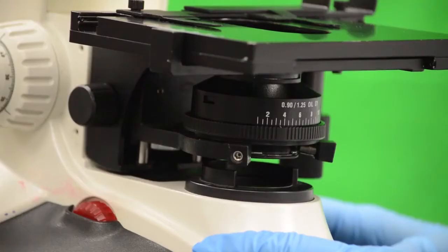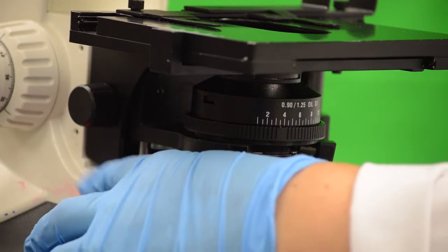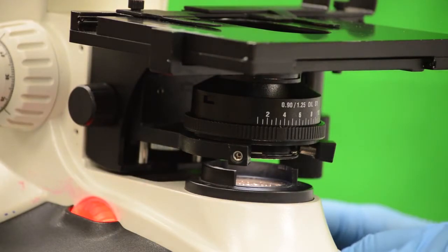The condenser. The condenser is a large lens structure attached to the bottom of the stage. The condenser is responsible for focusing light through the object to be viewed. Always make sure that the lens of the condenser is clean.